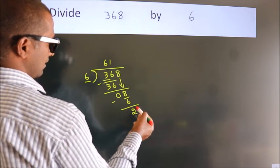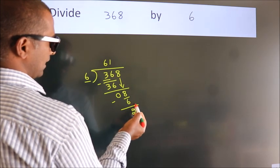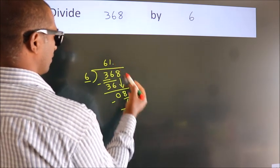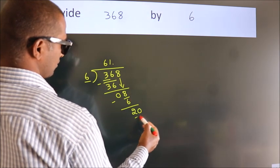After this, there are no more numbers to bring down. So what we do is put a dot and take 0. So we have 20.